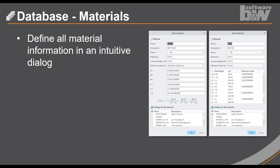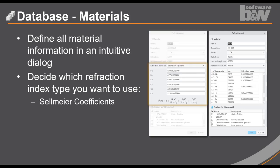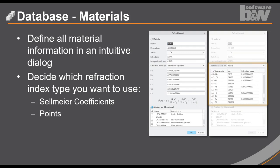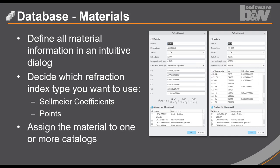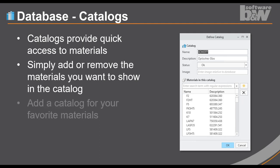First start with the materials. You define all material information and dialogs. You have to decide which refraction index type you want to use. At the moment, they are two supported. We have the Sellmeyer coefficients, where you enter six values from a polynomial. Or you can also enter the refraction index for the different wavelengths. And then, if some values are missing, Smart Optics will interchange between these values. And at the end of the dialog, you can assign your material to different catalogs. The catalog itself provides a quick access to the different materials. You can simply add or remove materials from this catalog. And, of course, it's possible to add a catalog for your favorite materials.